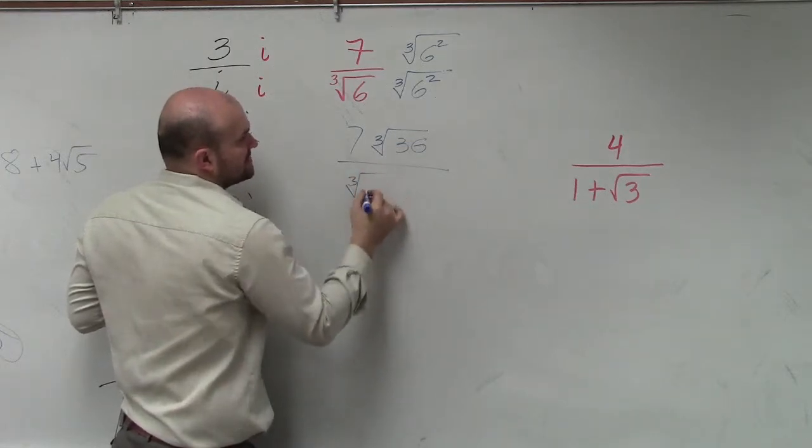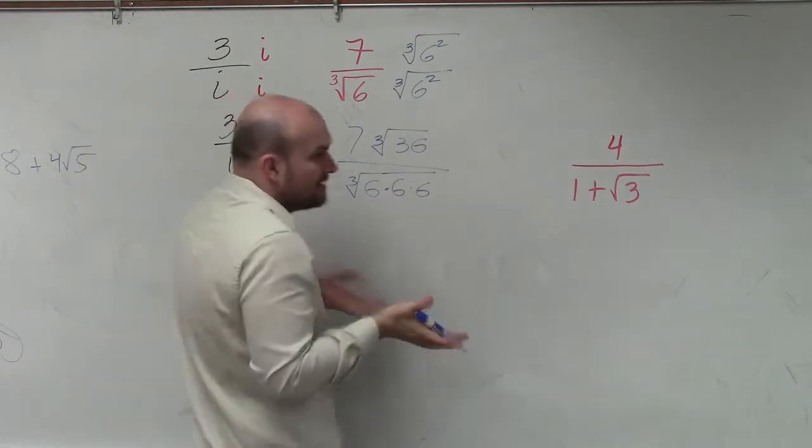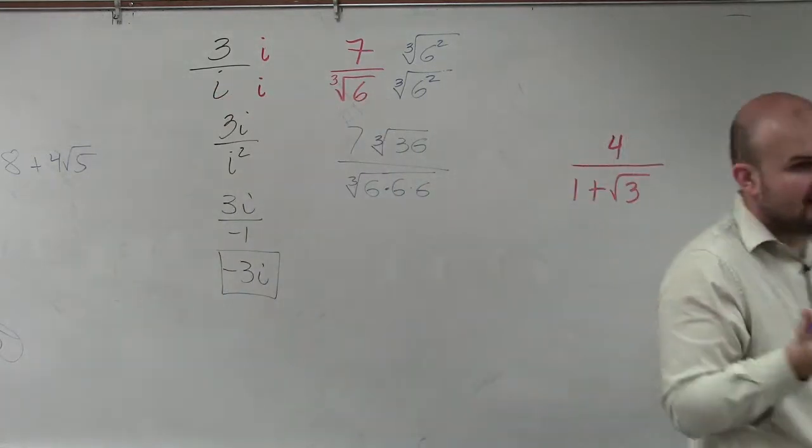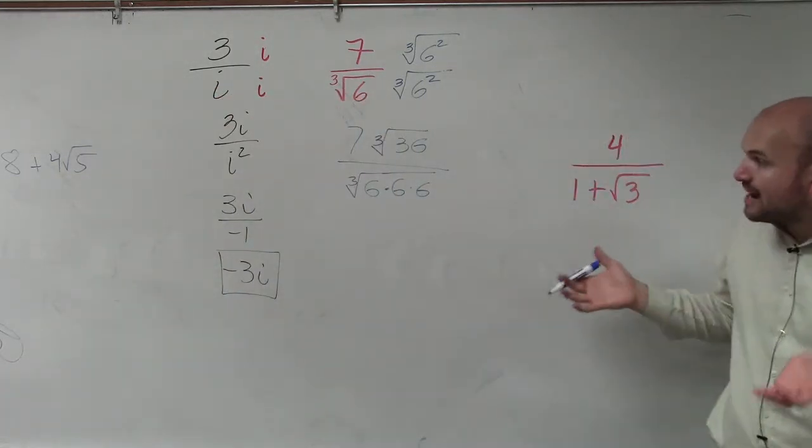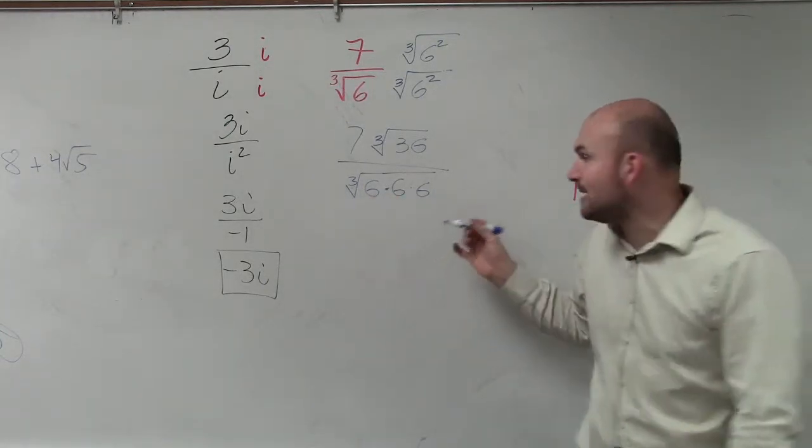So if you think about it this way, if you think of 6 squared as 6 times 6, the reason why I want that is because I can only take the cube root of three numbers multiplied by each other.